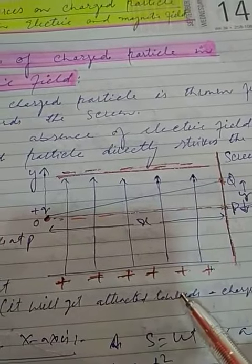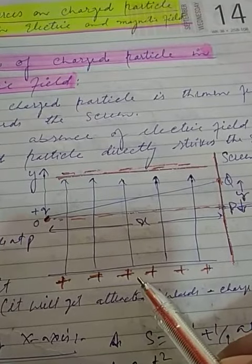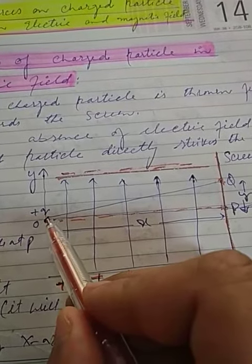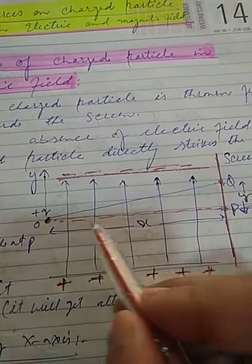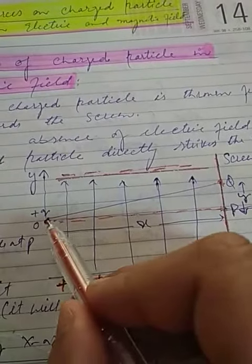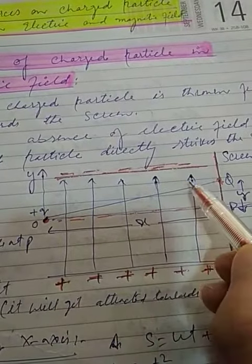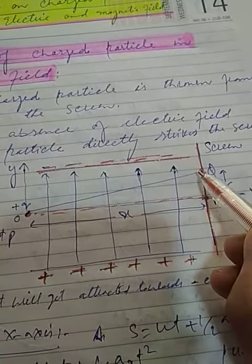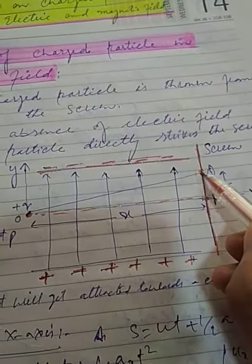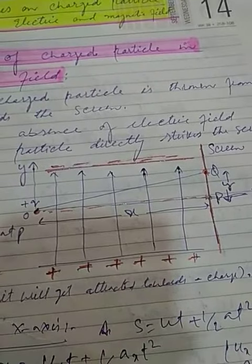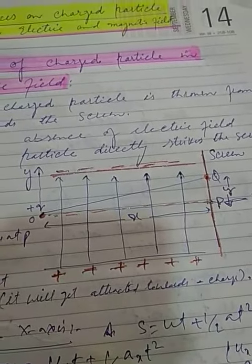Under the effect of this electric field, the charged particle will get deviated from its path. It will move towards the negative plate and strike the screen at point Q instead of at point P.